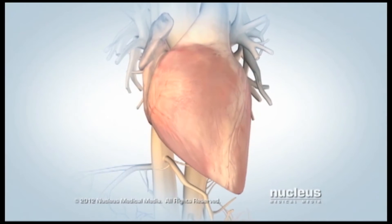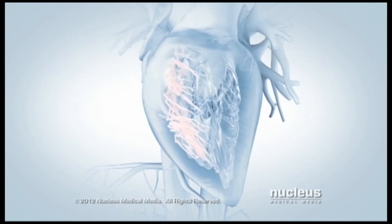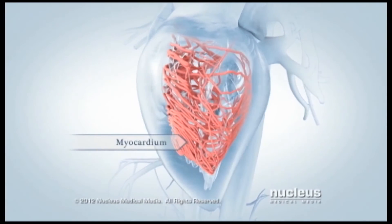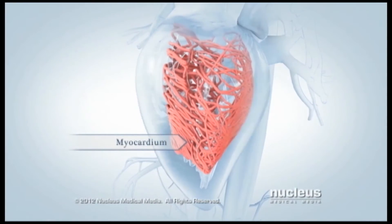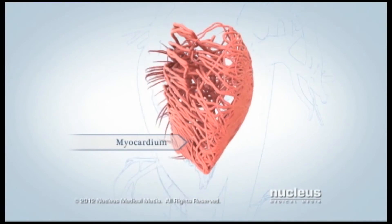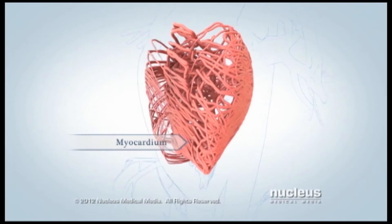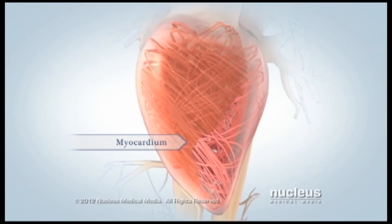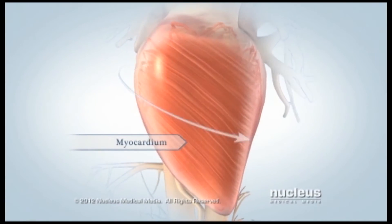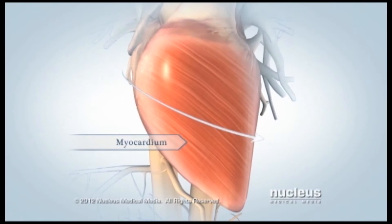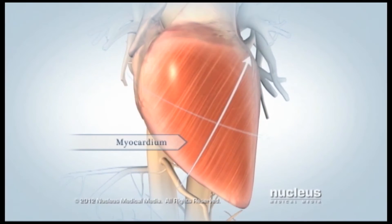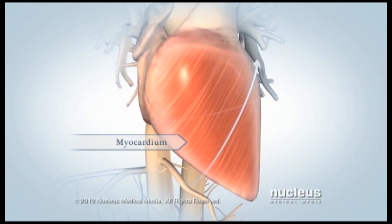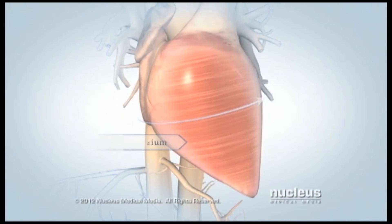In order to pump blood more efficiently, your heart muscle, called myocardium, is arranged in a unique pattern. Three layers of myocardium wrap around the lower part of your heart. They twist and tighten in different directions to push blood through your heart.